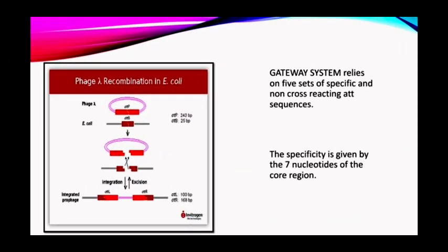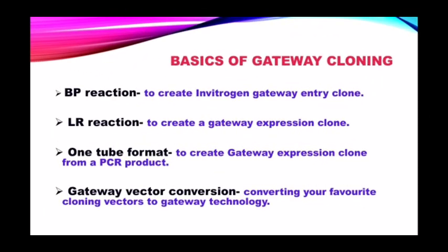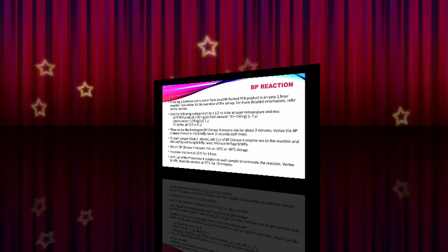The gateway system relies on five sets of specific and non-crossing ATT sequences. The specificity is given by the seven nucleotides of the core region. The basics of gateway cloning involve four types: first, a BP reaction to create an Invitrogen gateway entry clone; second, an LR reaction to create a gateway expression clone; third, a one-tube format to create a gateway expression clone from a PCR product; and fourth, gateway vector conversion, where you can convert your favorite cloning vectors to gateway technology.